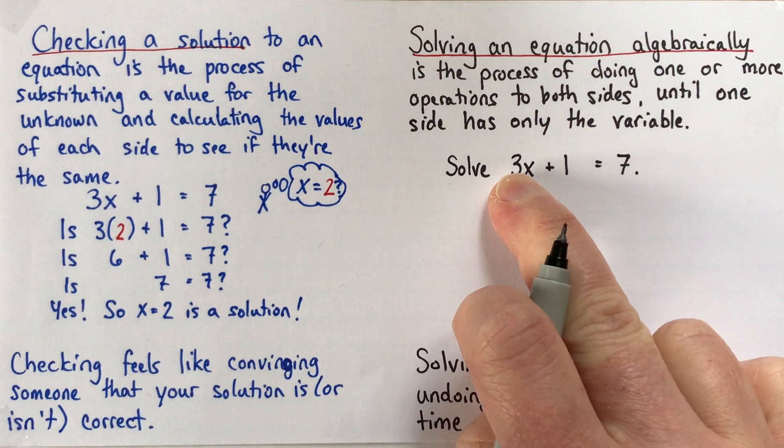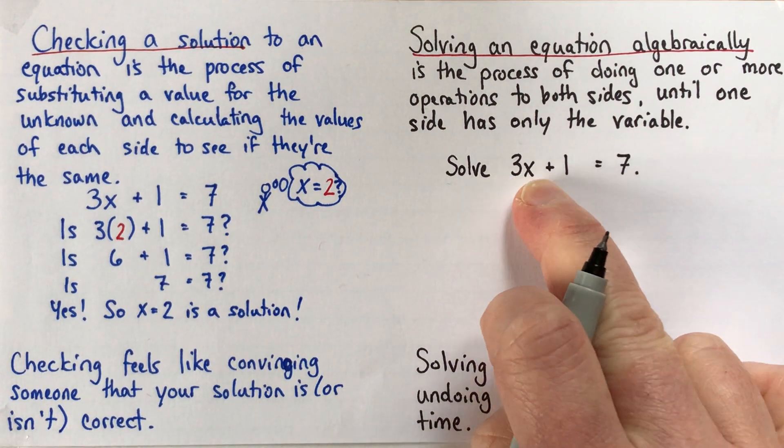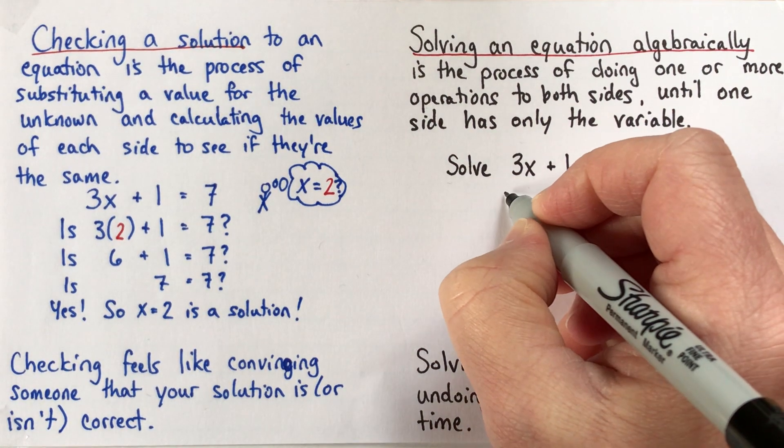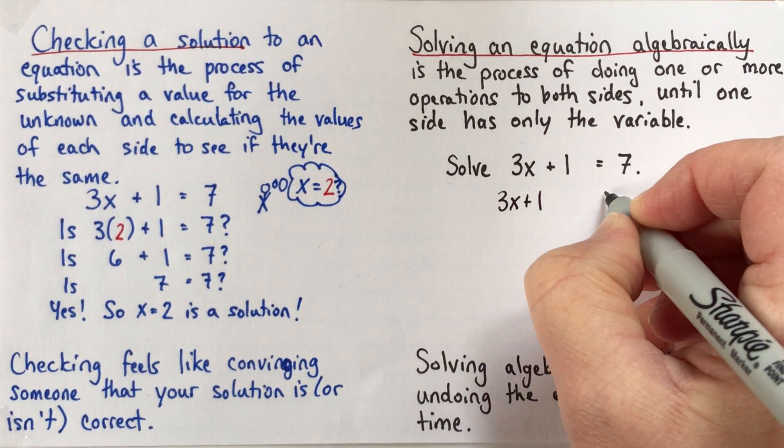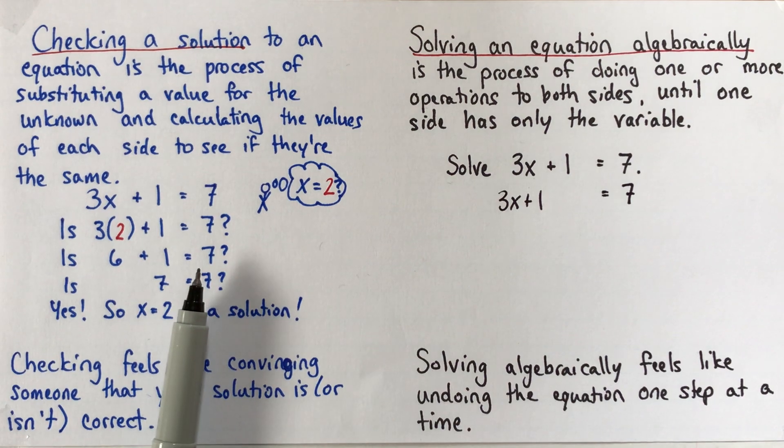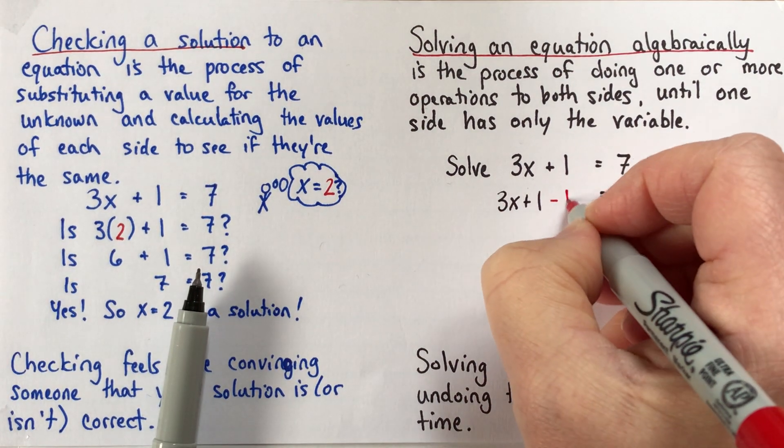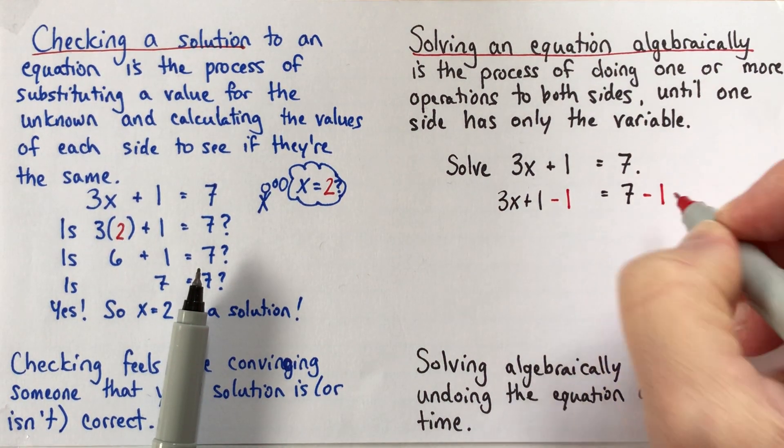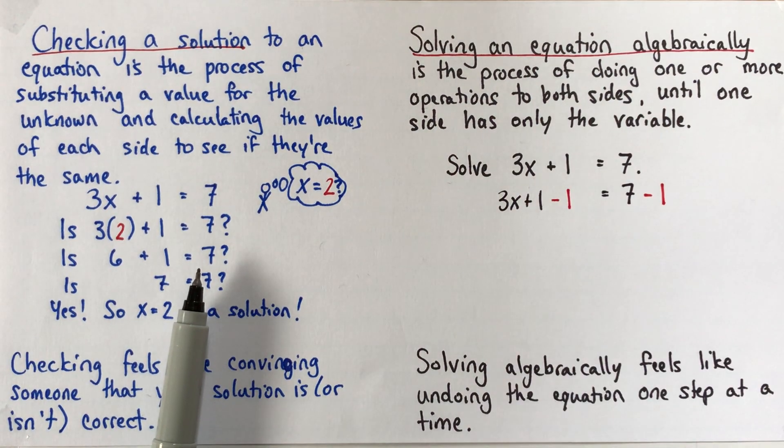So, we'd like to get x all alone. So we have 3x plus 1. I think the easiest way, we'll copy what we have on both sides. And the easiest way, I think, is to start off by subtracting 1 from each side. So here's an operation that we're doing to both sides.